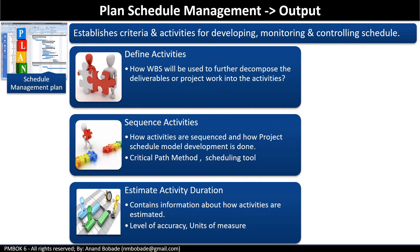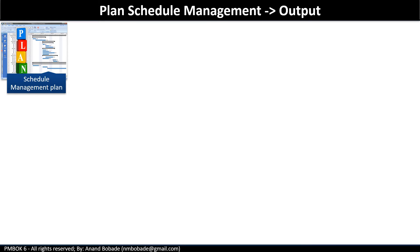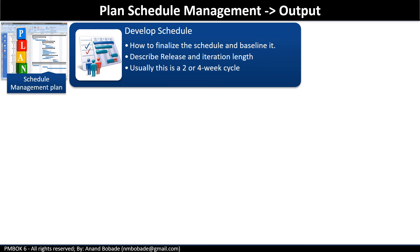For estimate activity duration, the plan contains information about how activities are estimated, the level of accuracy (meaning the acceptance range used in determining realistic activity duration estimates), and the unit of measure — what unit will be used for measuring time, such as hours, days, or months. For develop schedule, this section describes how to finalize the schedule, how to optimize it, and how to finally baseline it. It also contains information about releases and iteration length — if you are using an agile life cycle, you need to specify the sprint period, which is usually a two-to-four-week cycle, and it needs to be consistent.